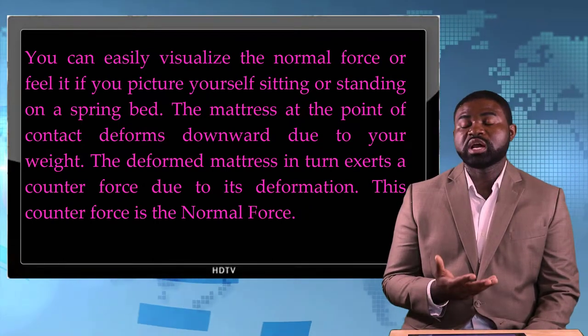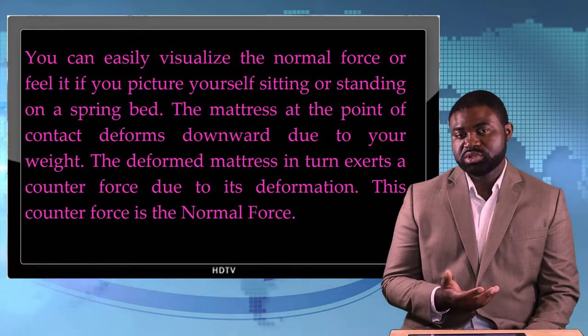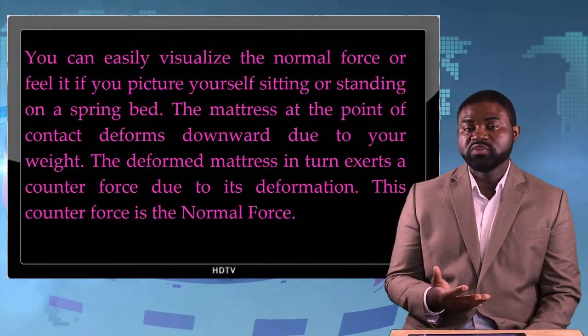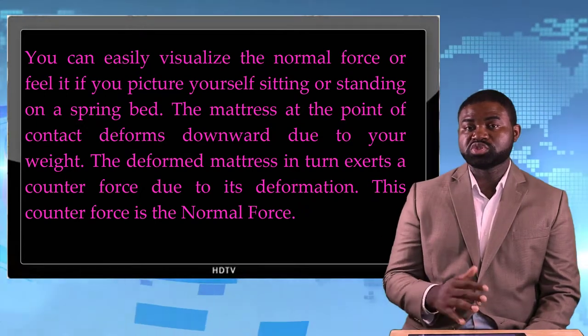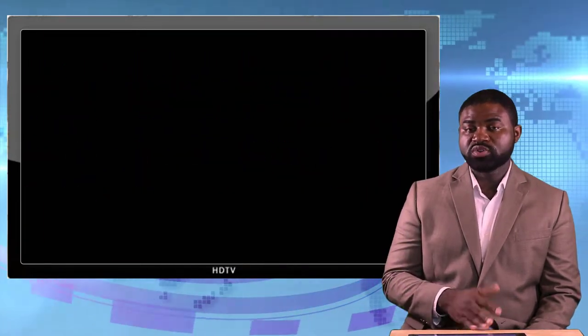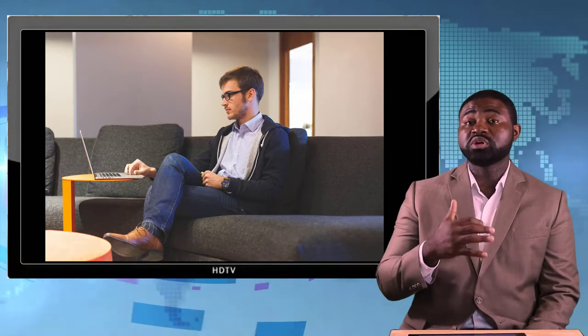Another easy way to visualize the normal force is to sit on a bed or couch and look at the couch — when you do, it is deformed, it is depressed. The reason it is deformed is because you're asserting a force downward because of your weight. The couch asserts a force upward to counter your weight, otherwise it would break. So if you sit on a chair and the chair breaks, the simple reason is because the normal force the chair asserts back on you is less than your weight.